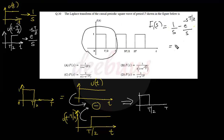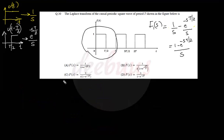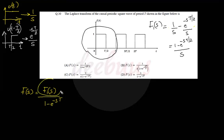That equals (1 − e^(−sT/2))/s. Since the signal is periodically repeating, the final Laplace transform is F(s) = F₁(s) divided by (1 − e^(−sT)), where T is the time period. Substituting F₁(s): numerator is (1 − e^(−sT/2))/s, denominator is (1 − e^(−sT)).